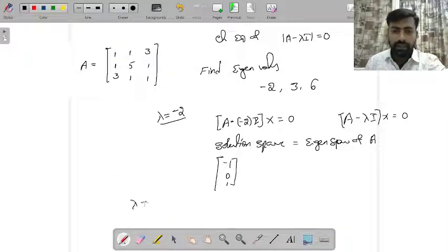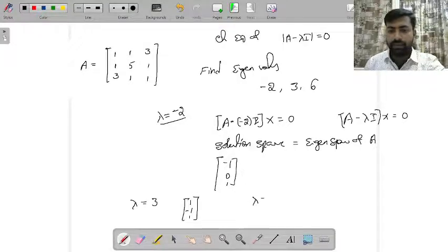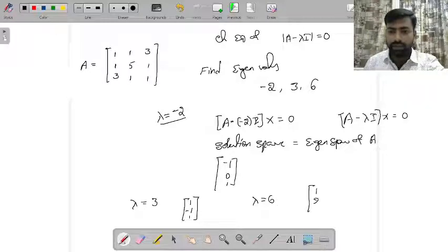And for lambda equal to 3, the eigenvector is 1, negative 1, 1. And for lambda equal to 6, the eigenvector is 1, 2, 1.